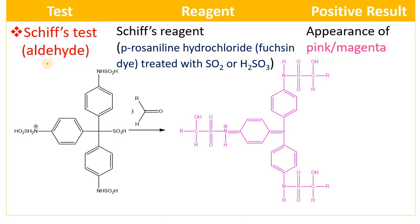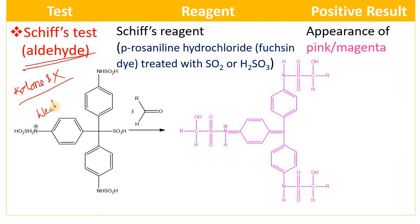Schiff's test is used for the identification of only aldehydes; ketones cannot be identified and are negative to the Schiff's test. The reason is that the Schiff's reagent is a very weak nucleophile. This weak nucleophile can attack on reactive aldehydes, since aldehydes are more reactive compared to ketones. Therefore Schiff's test is used to distinguish between aldehydes and ketones.